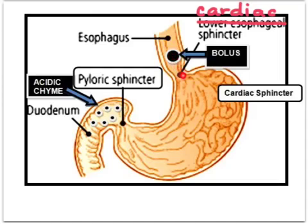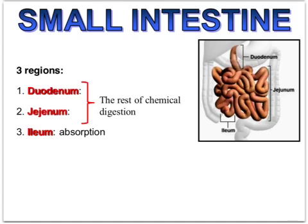After mechanical and chemical action in the stomach, the bolus has become acidic chyme. It leaves through the pyloric sphincter — the stomach thus begins and ends with muscular sphincters. The pyloric sphincter allows small amounts of acidic chyme to be spurted into the first part of the small intestine, called the duodenum. The small intestine has three regions: the duodenum, the jejunum, and the ileum. The first two regions complete chemical digestion to break macromolecules into monomer form, so that the ileum can absorb those monomers.